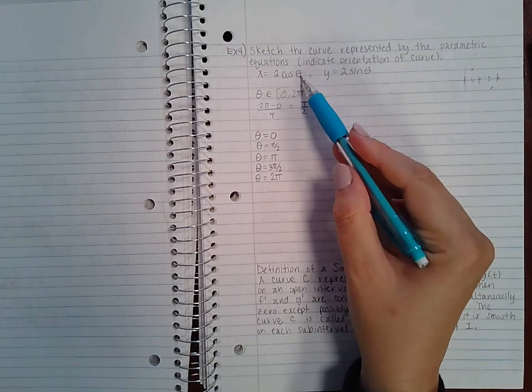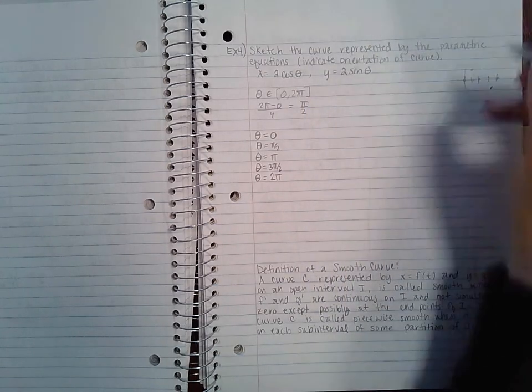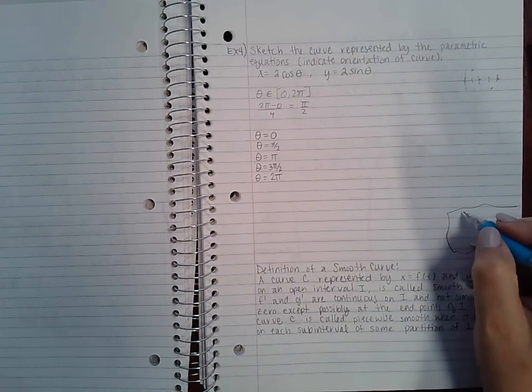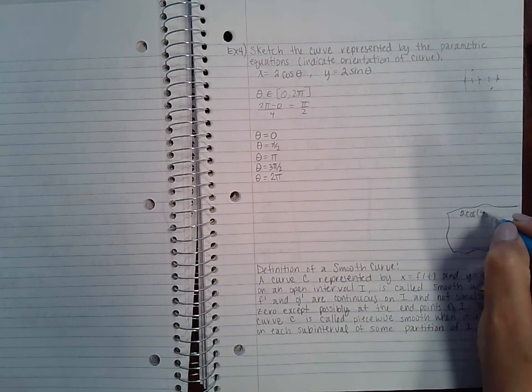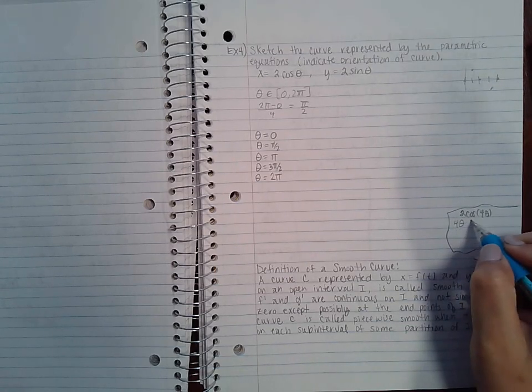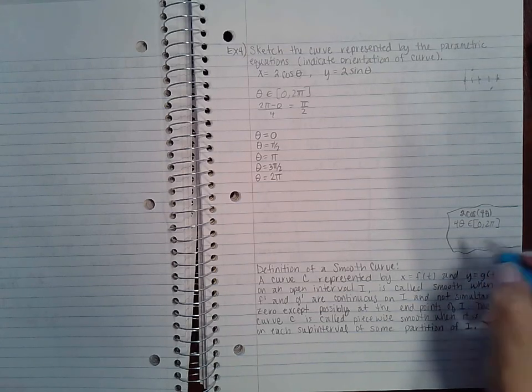Now this is important, because had this theta been, let's just say for example, because I know you're going to see it later, let's just say it was asking me for 2cosine(4θ). Okay, that 4θ would have to be between zero and 2π, and if I divide everything by four, that means that theta would have to be between zero and π/2.